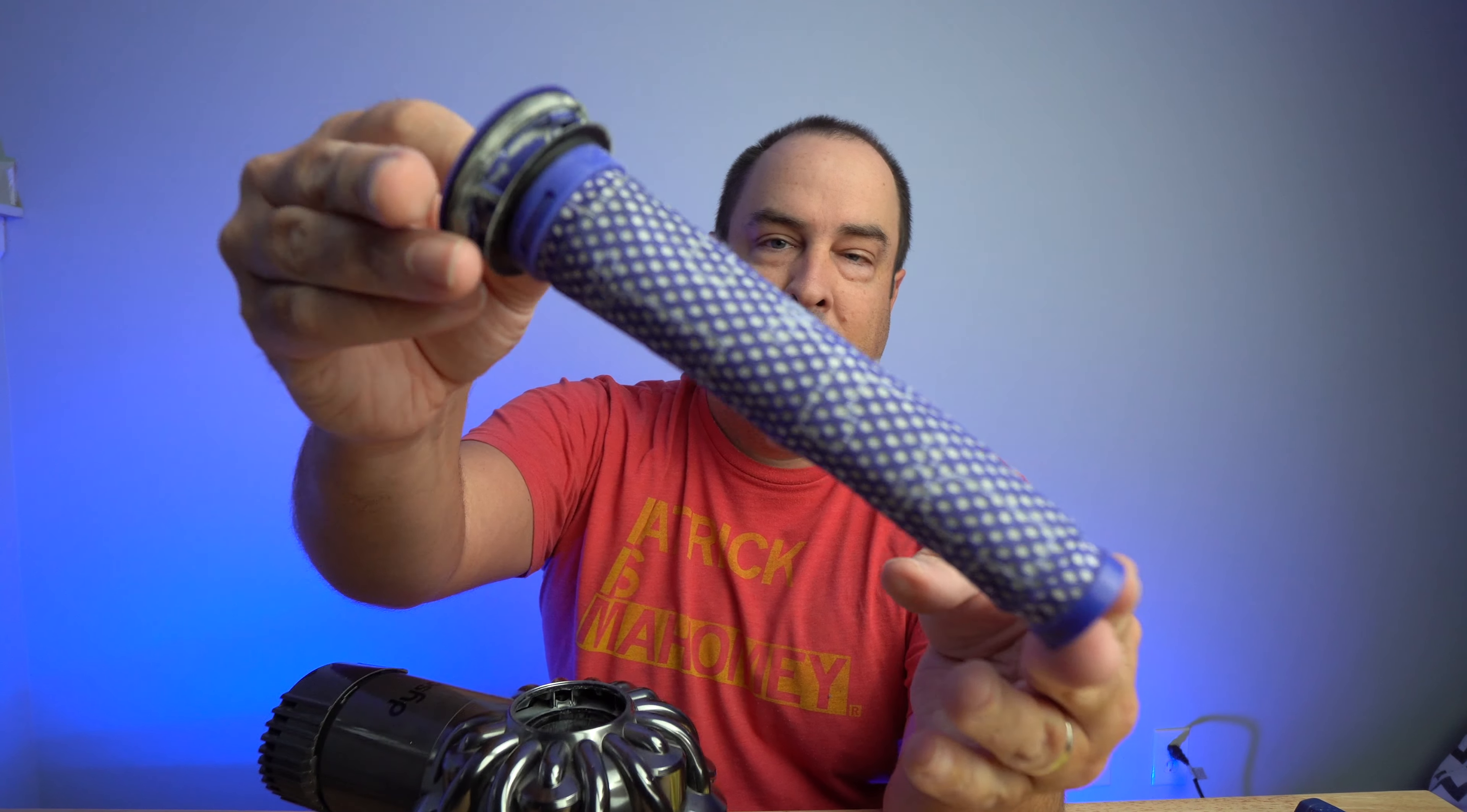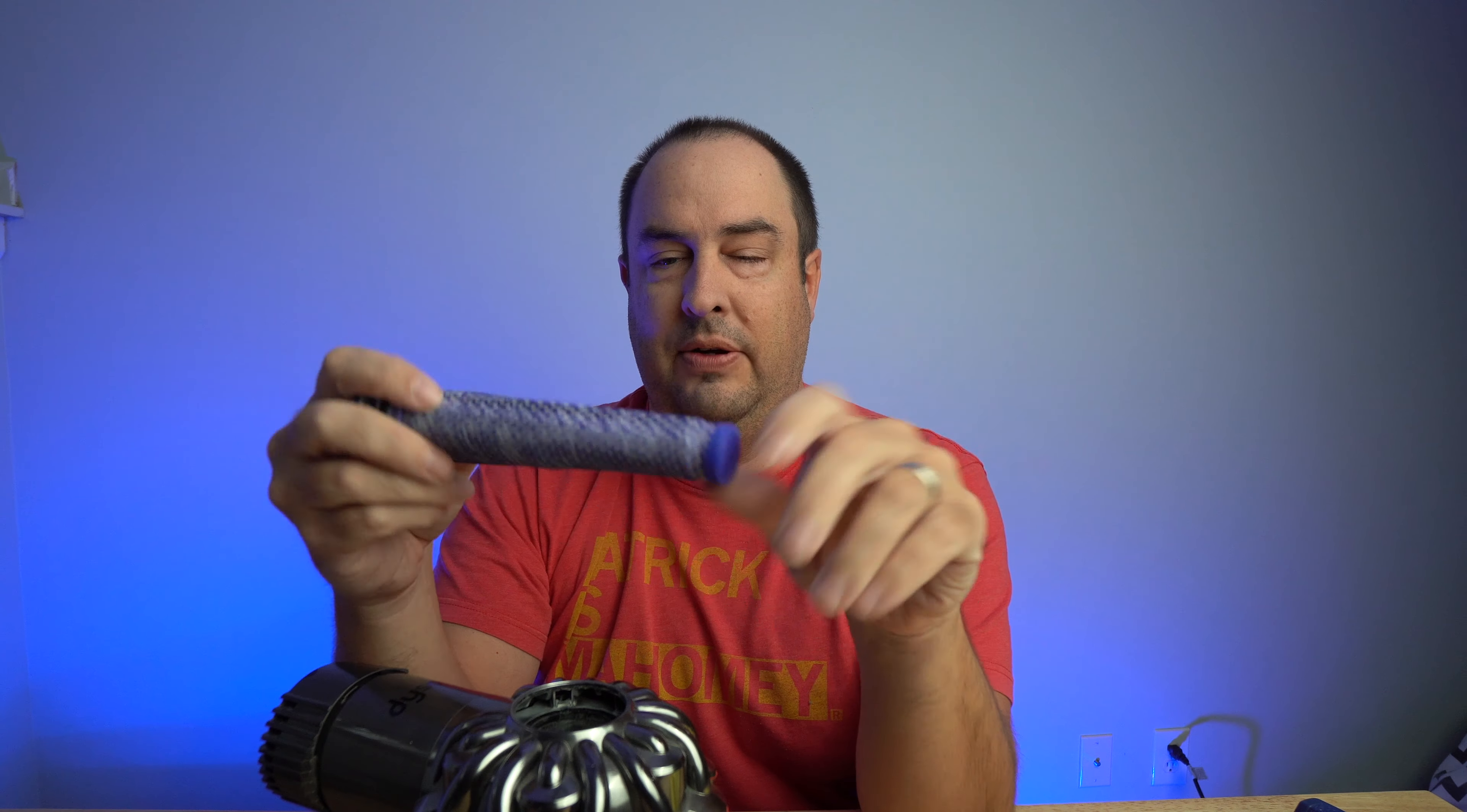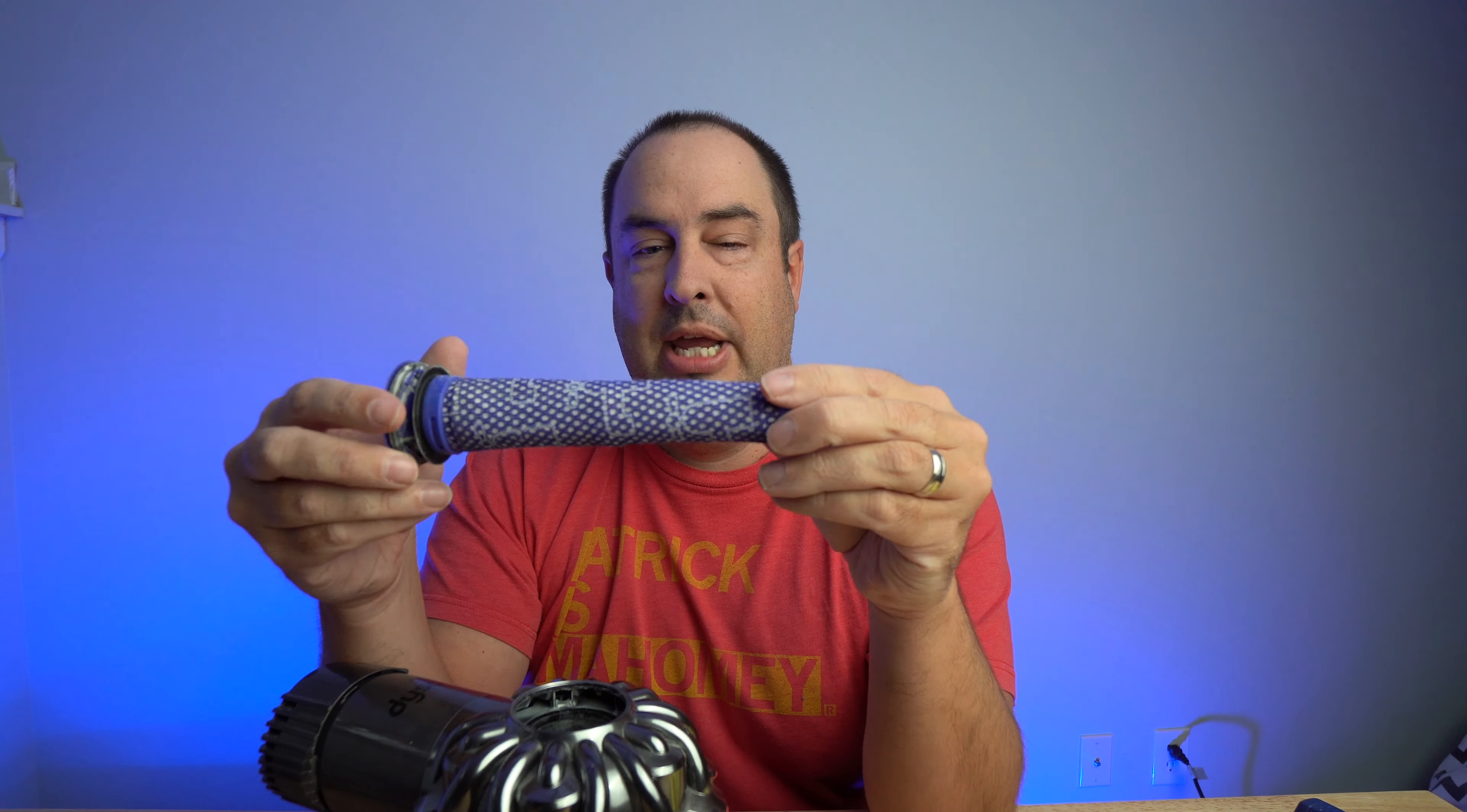Now, the next thing is remove the filter. As you can see on this filter, it is a little dirty. Go ahead and run this under the water and kind of get it wet and use your hand to kind of move around the fibers on this. You can replace these and they are recommended to replace, but you can wash this for a couple times if you need to.